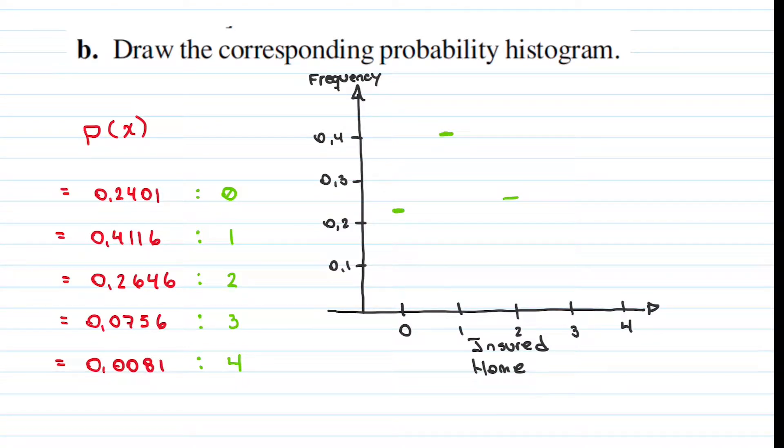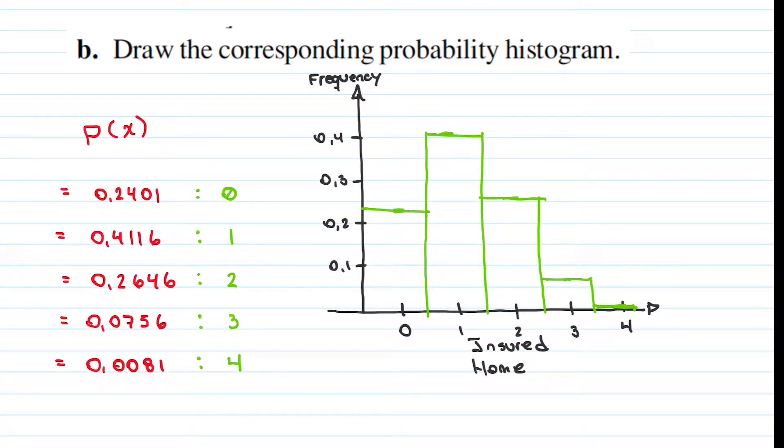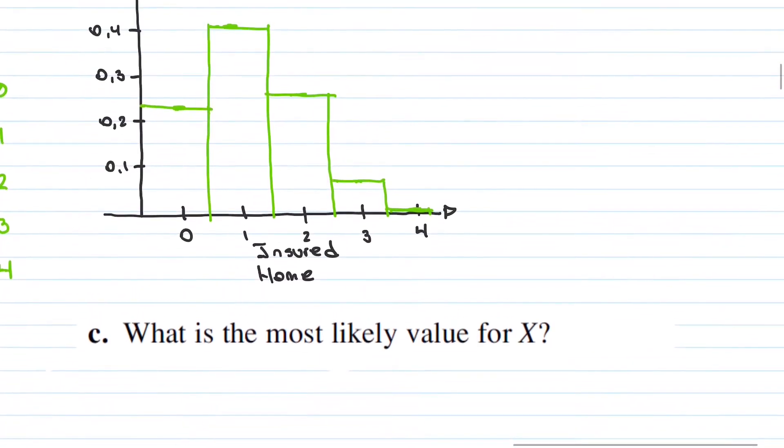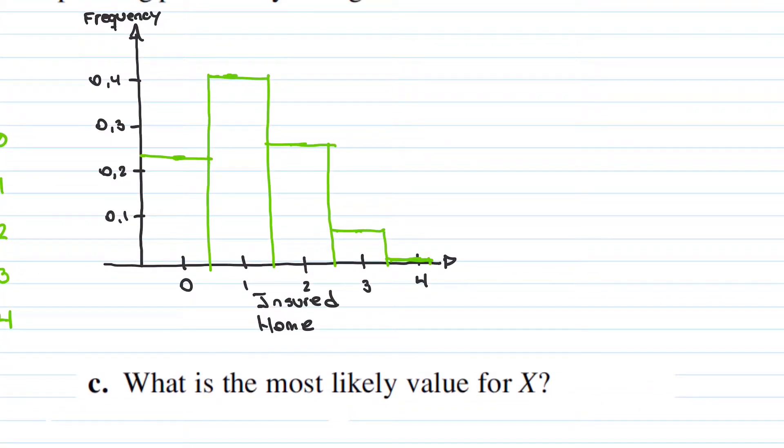Now, we set our values on the table, create some lines and part B is done. Part C, what is the most likely value for X? There is no science here, we just take a look on our histogram table and we can see that our higher value is 1, which means that it is more likely that from the 4 samples, just 1 of them has insurance.